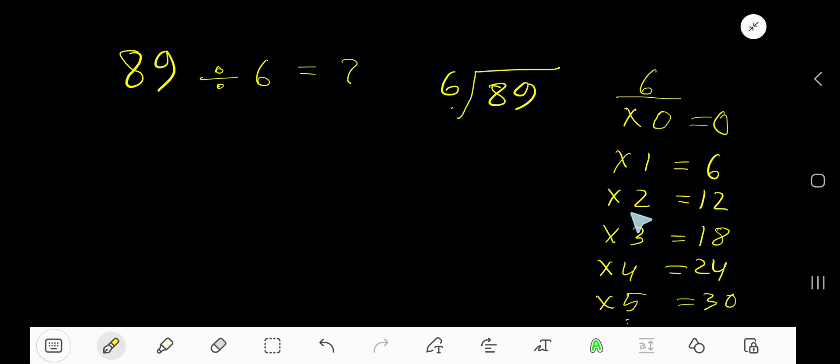6 goes into 8 how many times? 2 times is 12, so 1 time. 1 times 6 is 6. Subtract, then bring down this digit to get 29.